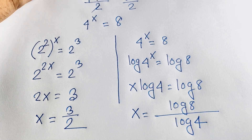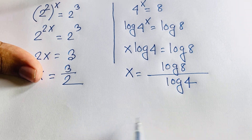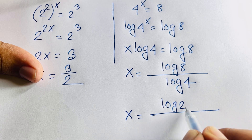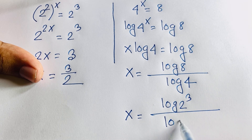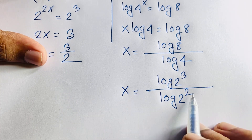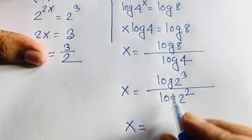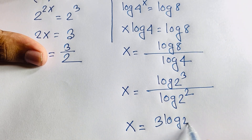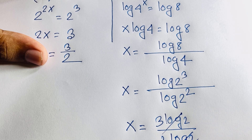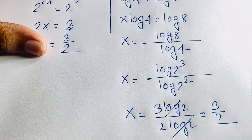Now, log 8 equals log 2 to the power 3, and log 4 equals log 2 to the power 2. The exponents move down according to natural log rules, giving 3 log 2 over 2 log 2. The log 2 terms cancel, and we find x equals 3 over 2. This is our final answer, solved by two methods.